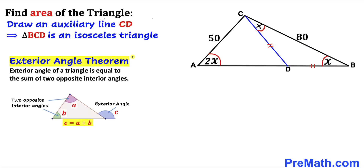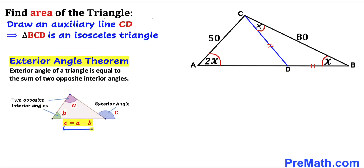Let's recall the exterior angle theorem: the exterior angle of a triangle equals the sum of the two opposite interior angles, so C equals A plus B. For triangle BCD, the exterior angle at D equals the sum of the two opposite interior angles x and x, giving us 2 times x.